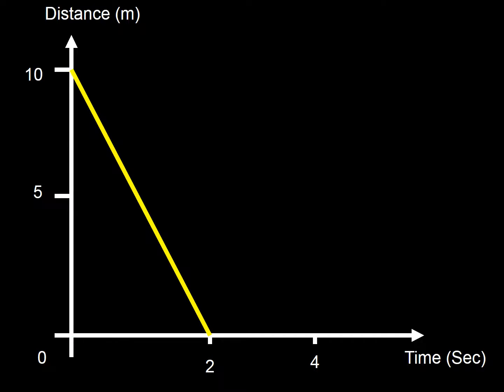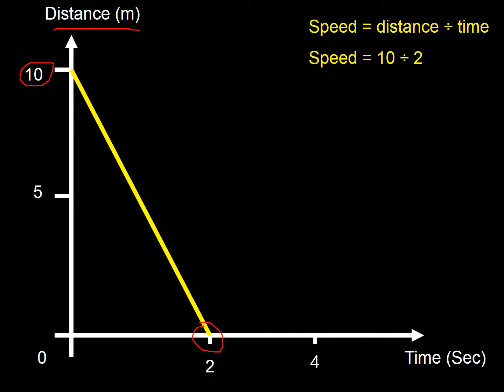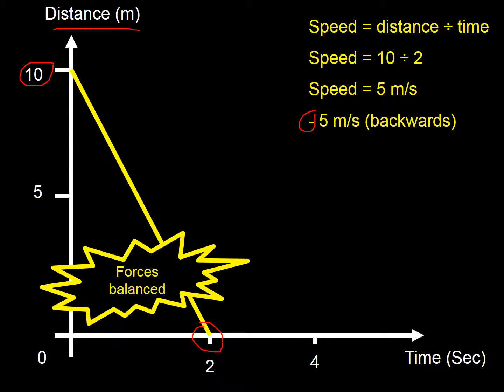Now this distance-time graph starts at 10 meters away and after two seconds it's at zero meters. It's traveling at a constant velocity — same speed the whole time — but it's actually coming towards us, because it was further away and now it's closer. Speed equals distance divided by time: 10 meters in 2 seconds gives 5 meters per second. We sometimes put a minus sign in just to indicate it's going in the opposite direction. Constant velocity means forces must be balanced.